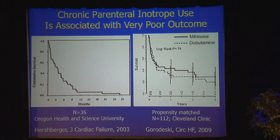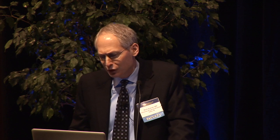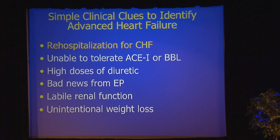The idea is, can we identify patients before they progress to that point? Is there a way to pick them up earlier in their disease process? These are some simple clinical clues that have now been advocated as ways to identify patients. The first one is rehospitalization for heart failure. Everyone is really tuned to rehospitalization for heart failure due to the reimbursement penalties that our hospitals face if we have high readmission rates.